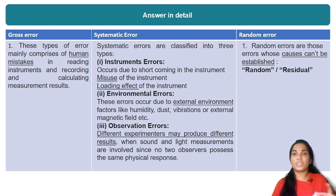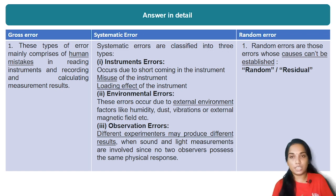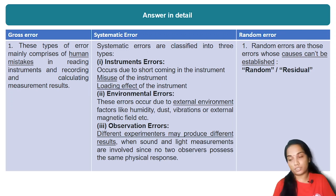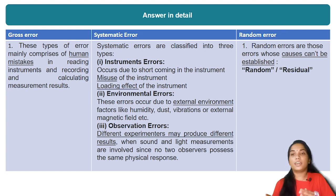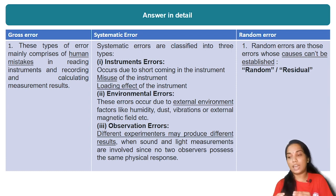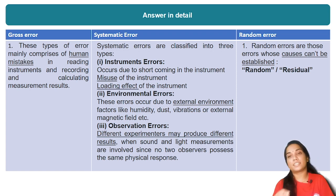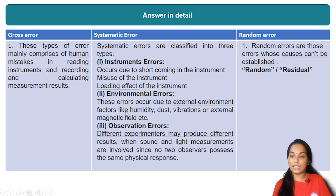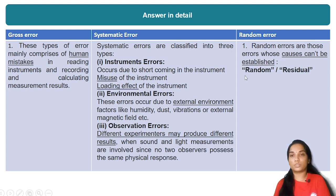Random errors can come from various sources such as sound or light interference. We can detect errors in the observed value and see residual errors in the random area. These are the key words we can use to click on the MCQs.